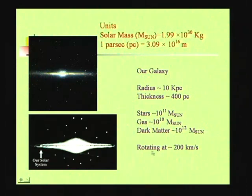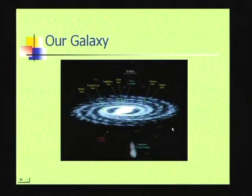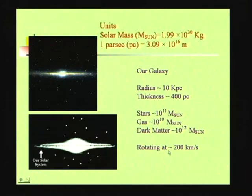The whole galaxy is rotating — the whole disk is rotating at a speed of roughly 200 kilometers per second. In yesterday's lecture I gave you some idea of how we came to this picture: we live in a collection of stars called a galaxy, which is a disk, we are located towards the periphery of the disk, and the whole disk is rotating at around 200 kilometers per second.